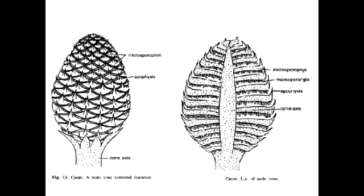Each microsporophyll is attached to the cone axis, and the part of the microsporophyll curving away from the axis upward is called the apophyses. The upper surface of the microsporophyll is sterile, while the lower surface is fertile and bears many microsporangia in groups called sori. The microsporophylls in the middle part of the cone are large and get gradually smaller towards the base of the apophyses.